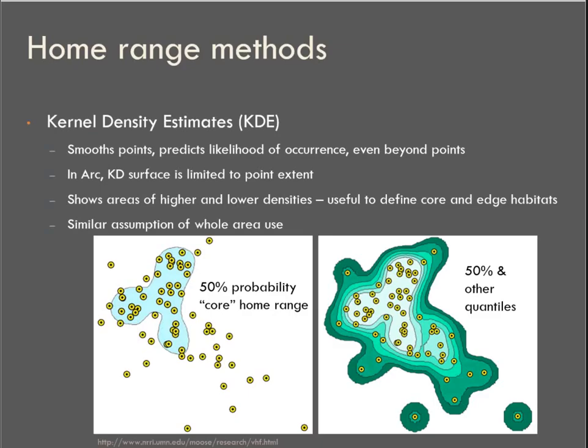The other method that we've talked about is called KDE, kernel density estimates. It's a density surface. It takes point locations and smooths, predicts a likelihood of occurrence, and can extend even beyond the points. Because it's a kernel, that three-dimensional shape around each point, you would expect that if the coyote was pinged here, or the animal was pinged here, there's a probability that it's using this larger area. That's the kernel, right?